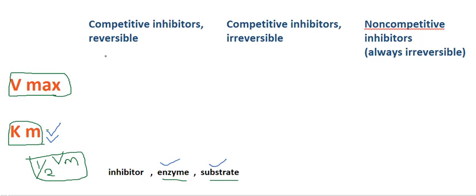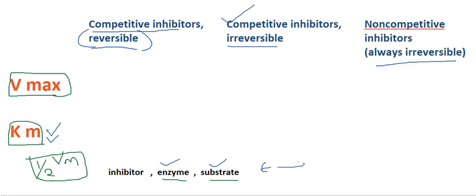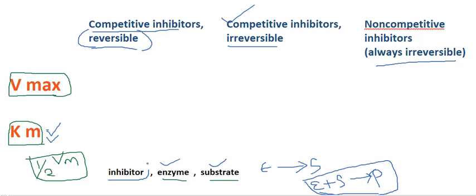Coming to competitive inhibitors — which can be reversible or irreversible — and non-competitive inhibitors, which are always irreversible. For this you have to know the basic: enzyme acts on substrate to produce some product, but we don't want this reaction to happen in our body, hence we use drugs called inhibitors to inhibit this reaction.